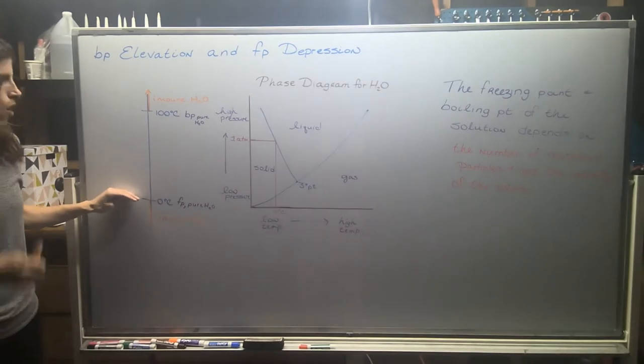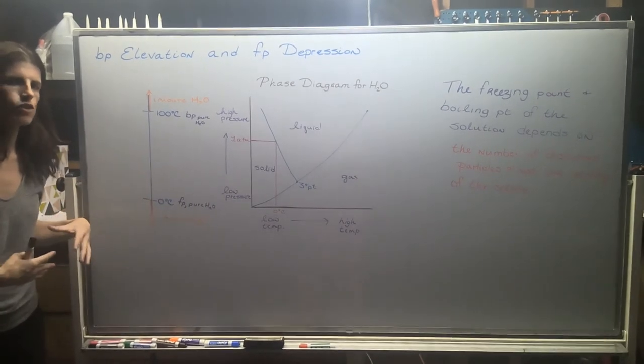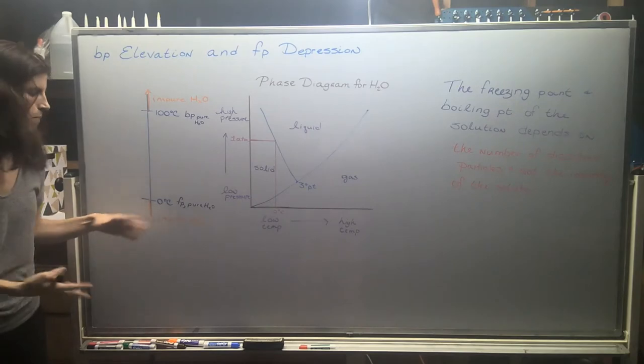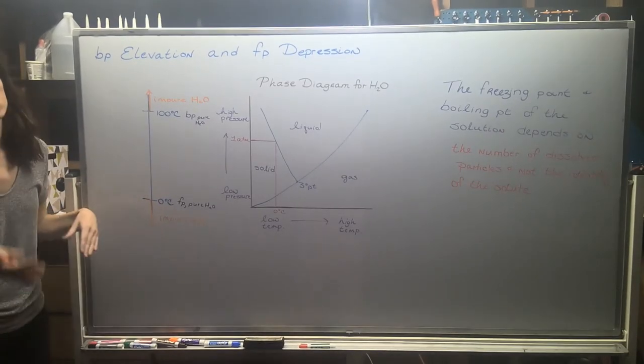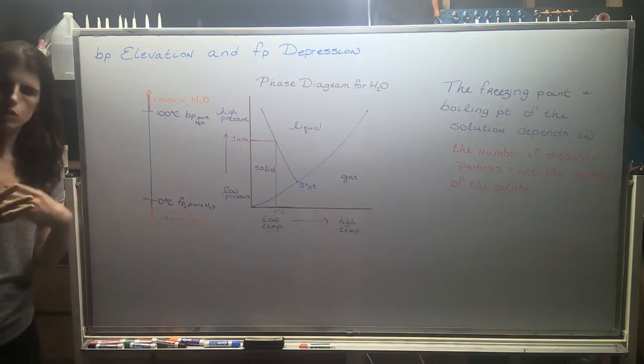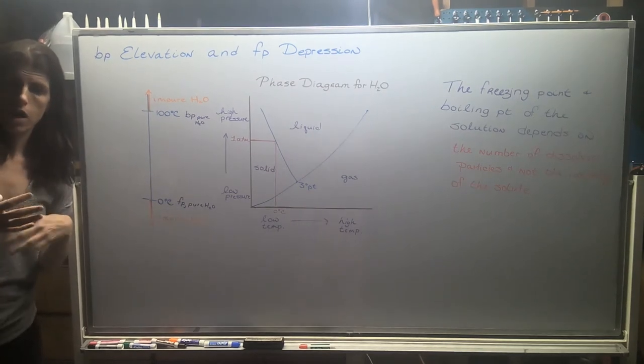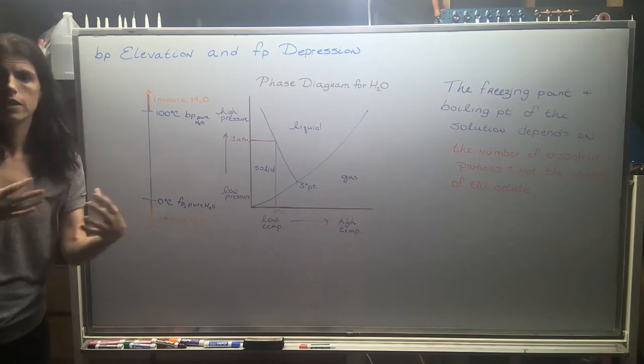But if you throw the salt on the road, well, now it's not going to freeze at zero degrees Celsius. Maybe it starts freezing at negative 10 degrees Celsius. So that gives you some wiggle room, especially on those days where you see a lot of freezing and melting.